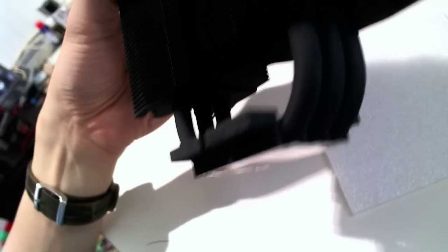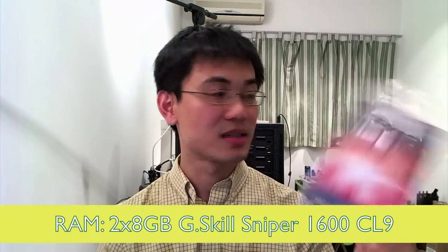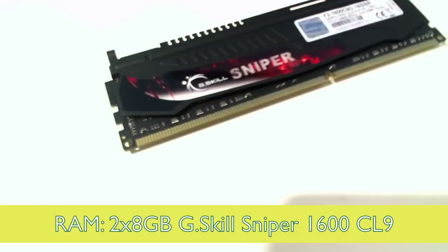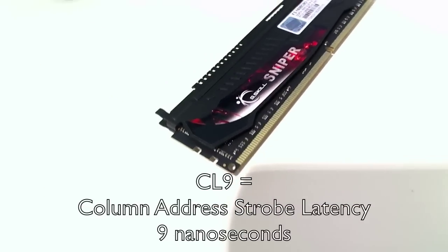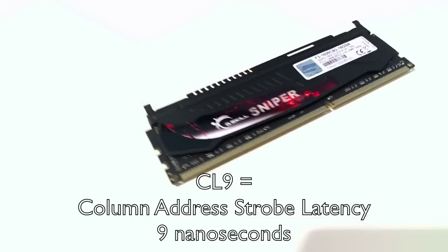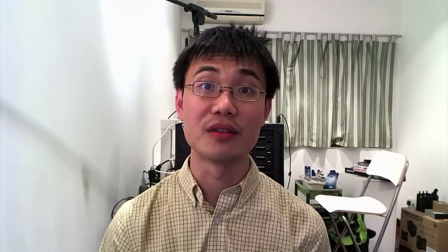For the RAMs, I got the G.Skill Sniper 16-gig pack. It's two 8-gig RAMs, CL9, 1600 MHz. You might be thinking that 16GB is a little bit of an overkill, but I will be allocating a substantial amount of it, perhaps up to 8GB, for RAM disks so that I can have a really quick scratch disk when I'm doing my Photoshop. I will be going into details on how you can set up a RAM disk so that you can actually write scratch data through RAM as opposed to the hard drive, which will give you an enormous boost in performance.